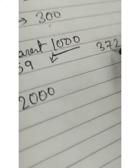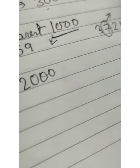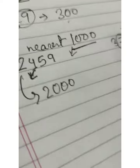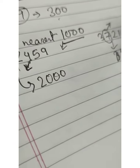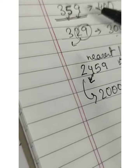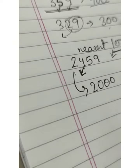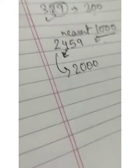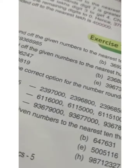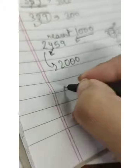But in this case, if the hundreds place value is seven — it is more than five — so it will not be three thousand, it will be four thousand. So in this way we can do nearest ten, nearest hundred, and nearest thousand. We just have to check the second position — ki wo five se zahada hai ya five se kam hai.